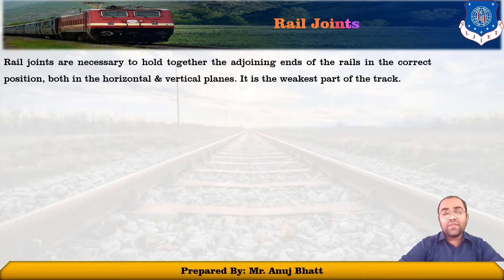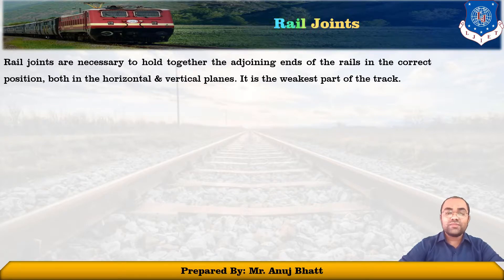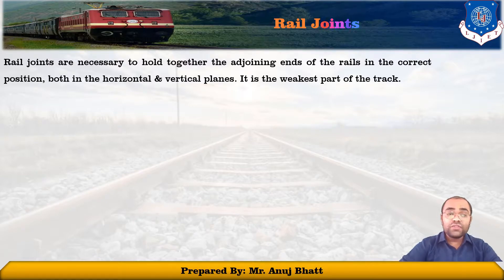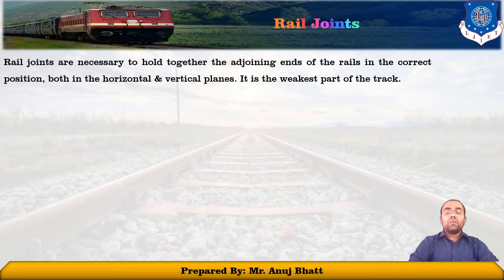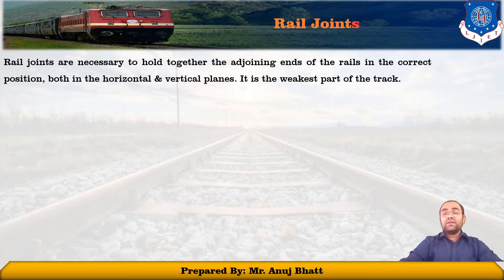Rail joints are necessary to hold together the adjoining ends of the rails in the correct position to ensure the continuity of the rail sections. While joints form the biggest part of the track, it is observed that the strength of rail joints is only 50% of the strength of a rail. A gap of 6 to 15 mm is usually kept between the adjoining rails to allow for the expansion of the rail. Sleepers are placed at closer spacing at the rail joints for more stability of the track. Modern track is required to meet higher speed and axle loads; therefore, the minimum joints should be provided by welding the rails for long lengths of 1 km and over.